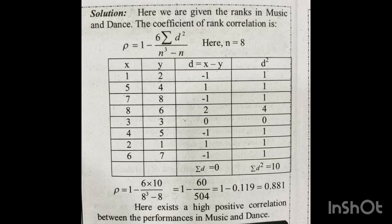We compute the D values — the difference between ranks in music (X) and dance. The D values are: 1 minus 2 equals minus 1; 5 minus 4 equals 1; 7 minus 8 equals minus 1; 8 minus 6 equals 2. The fourth column is D-squared: minus 1 squared is 1; 1 squared is 1; minus 1 squared is 1; 2 squared is 4; 0 squared is 0; then minus 1 squared is 1; and so on.